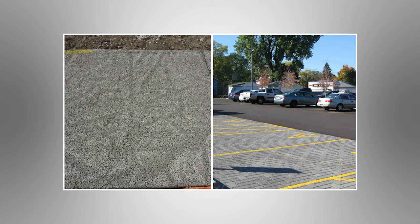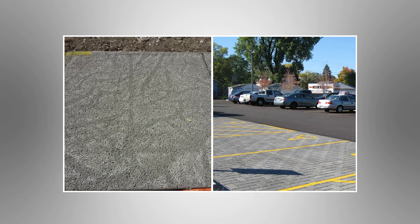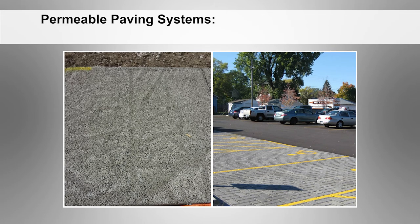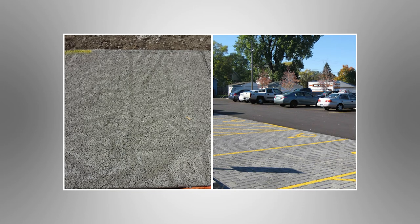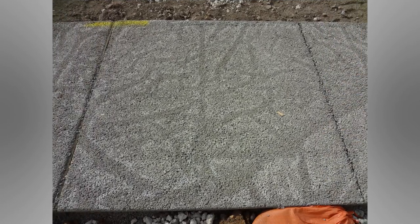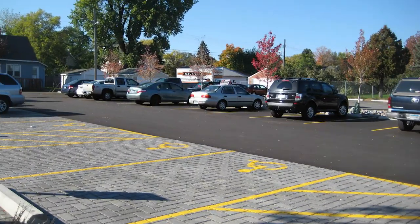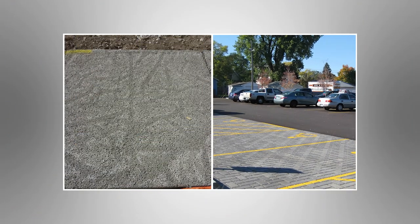Another option to reduce stormwater effects is to replace existing paving with permeable paving systems. These are specially designed surfaces that replace asphalt and other traditional materials by utilizing pore gaps between the material that allows water to filter through into the ground. You can see two common examples of permeable pavement here. The picture on the left shows a form of permeable asphalt that can replace traditional sidewalks. The picture on the right shows a contrast between permeable paving in the foreground and traditional pavement in the background. These are permeable grid pavers that allow water to infiltrate through the gaps unlike traditional pavement.